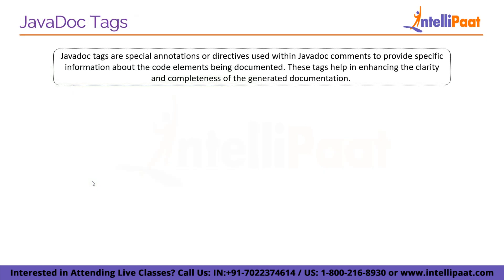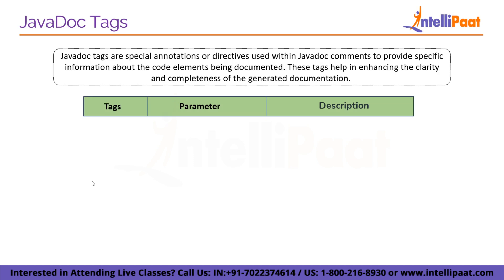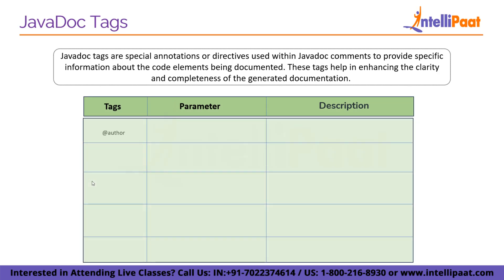Javadoc tags are directives embedded within the Javadoc comment. Their purpose is to provide precise details about the documented code elements, which improves the clarity and comprehensiveness of the generated documentation. The very first tag is @author, with the parameter being the author name, which is used for describing the author.